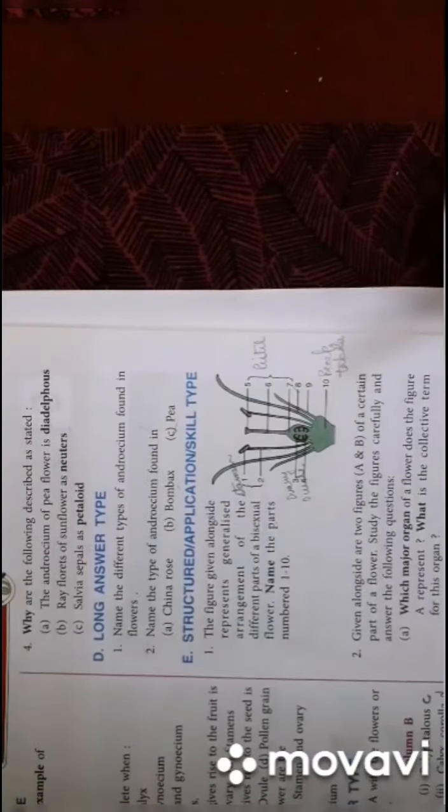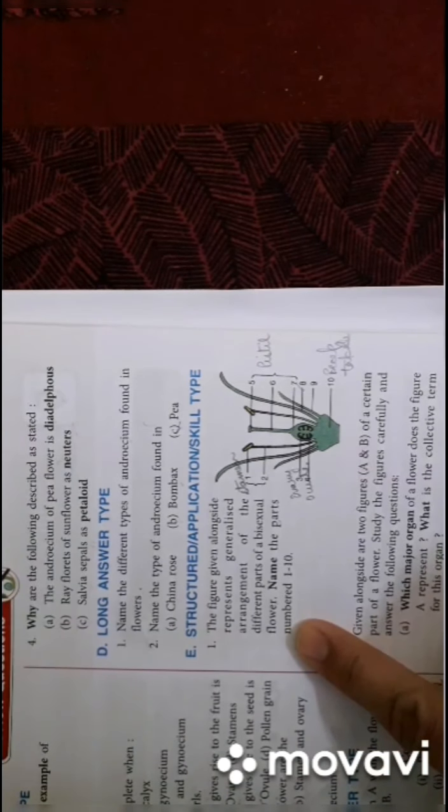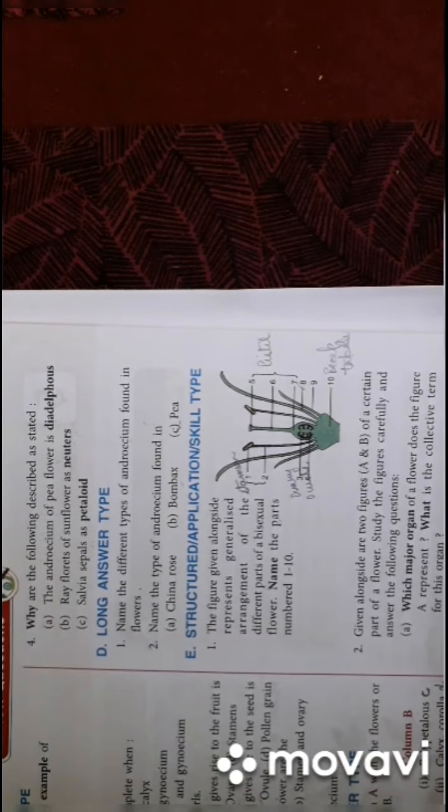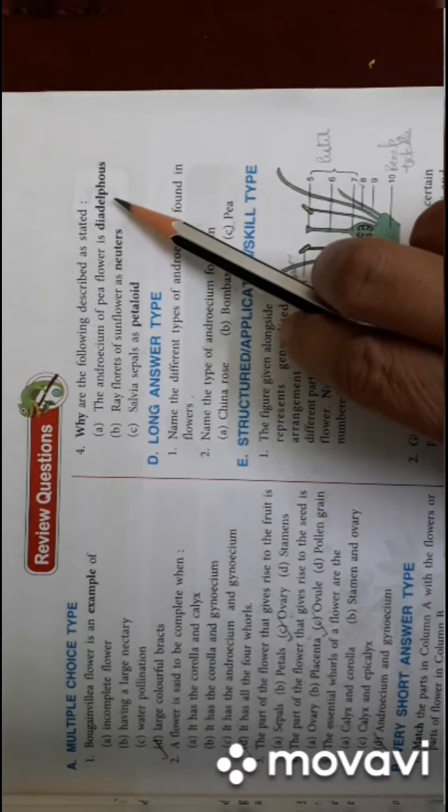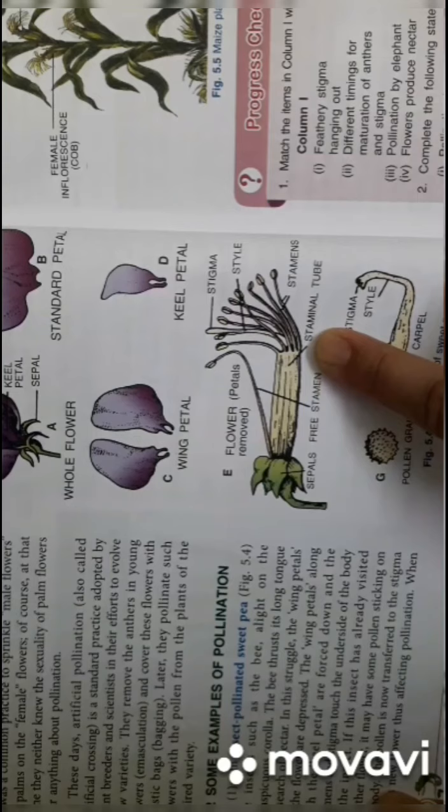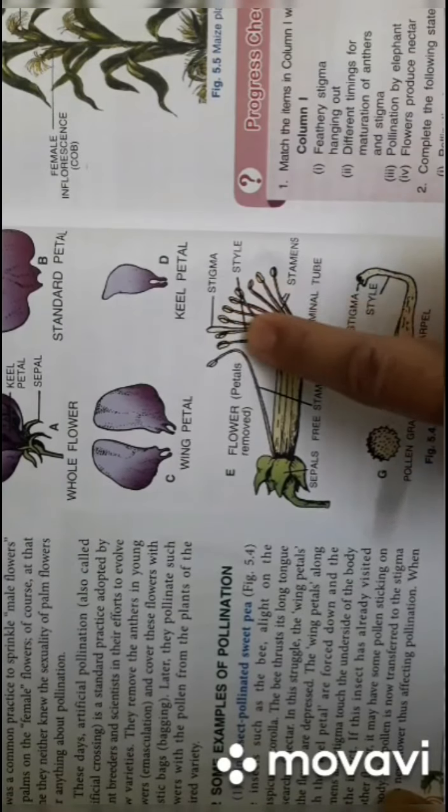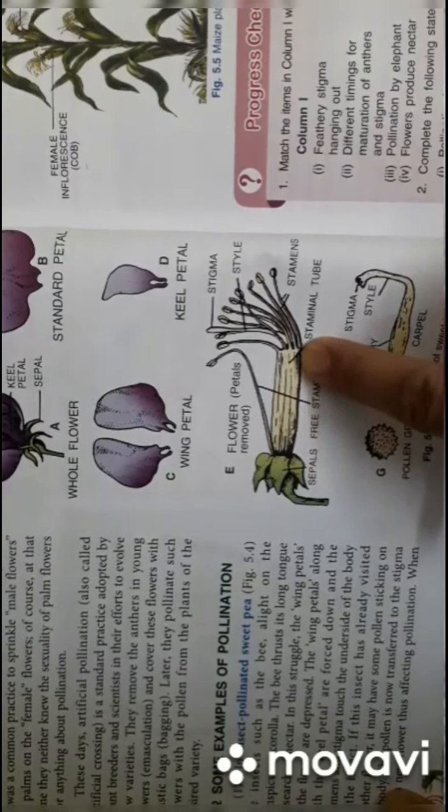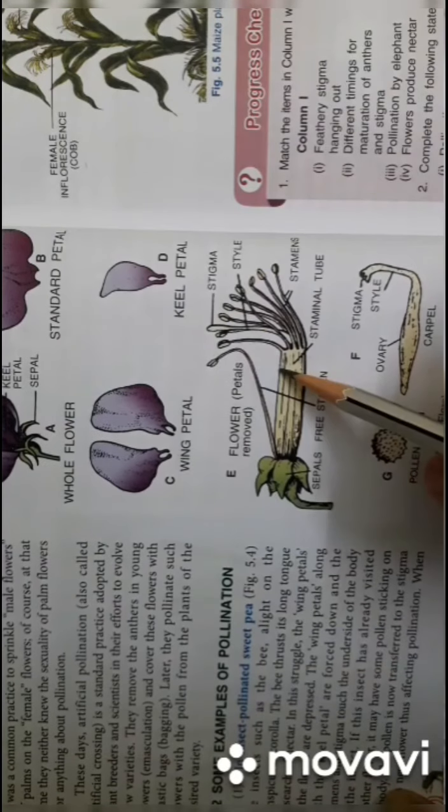Next question is why are the following described as stated: the androecium of pea flower is diadelphous. It is because in pea flower the arrangement of androecium is in two groups. The androecium of pea flower is diadelphous because the stamens are joined in two groups. You can see page number 42, and this is the arrangement of stamens in pea plant. These nine stamens - total ten stamens are there - nine are fused to form one staminal tube and this is the tenth one which is the free stamen. So it is arranged in two groups, that is why we call it diadelphous.